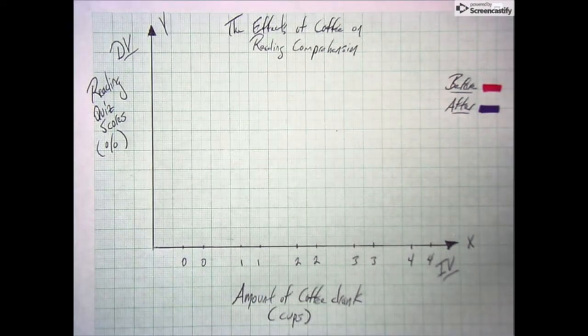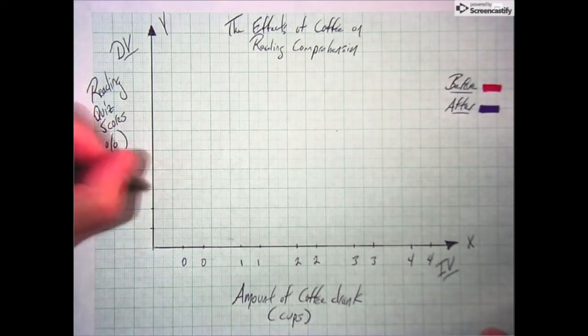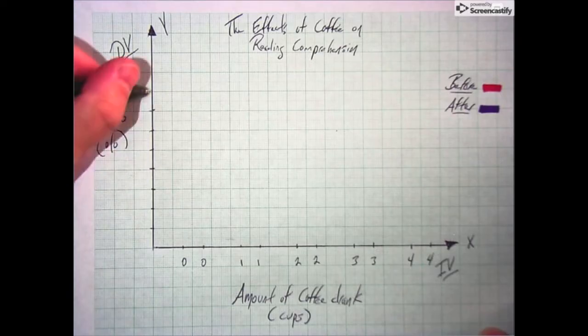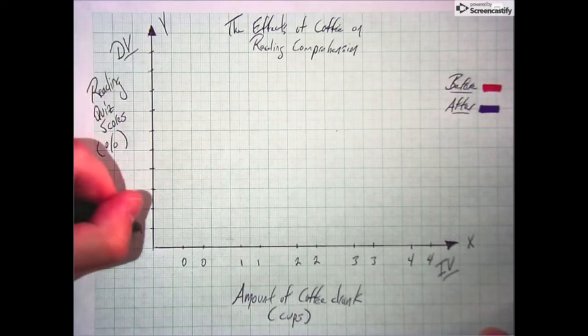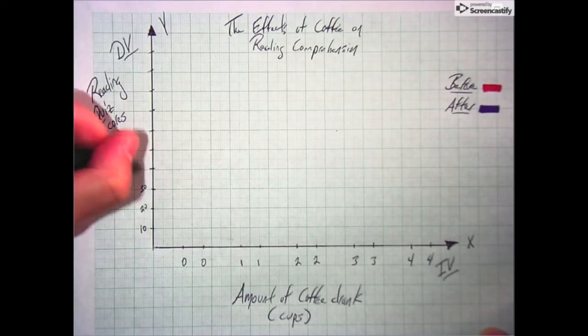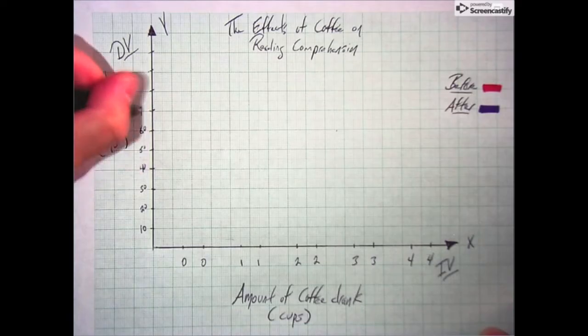My y-axis is easy. All I am jotting down is a range of quiz scores. Always start with zero. My highest score was almost 100, so I'll use this as my last value here. And done. Now we're ready to plot our info.